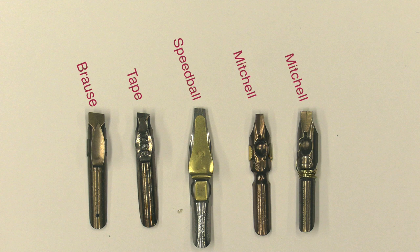Next is the Speedball nib. Here too, you have a reservoir at the top of that. Next, you have the Mitchell nib, and the underside of the Mitchell nib has a reservoir. We'll talk about that.